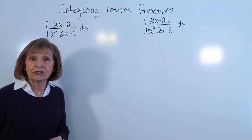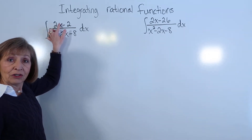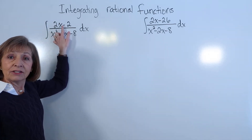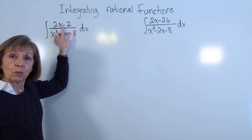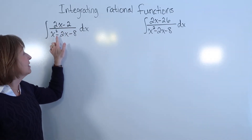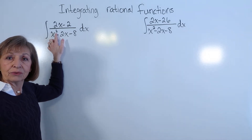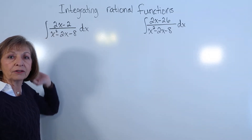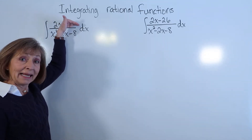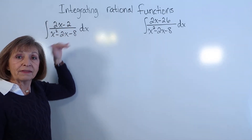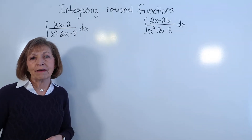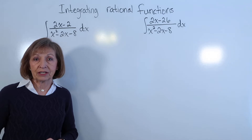The next thing I do is compare the highest degree in the numerator with the highest degree in the denominator. The highest degree in the numerator here is 1, a degree-1 polynomial. The highest degree in the denominator is 2, a degree-2 polynomial. When the degree of the numerator is the same or bigger than the degree of the denominator, I need to do polynomial division before integrating.